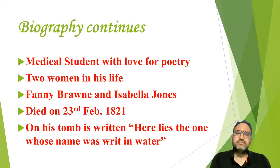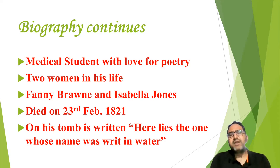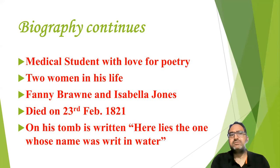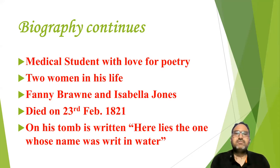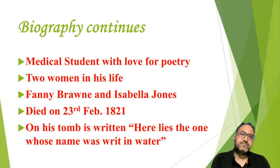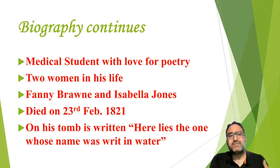It is said by some critics that two women came into his life, though he did not marry either. One was Fanny Brown and the other was Isabella Jones. John Keats was very close to Isabella Jones — he mentioned her at many places in letters he wrote to his brother. Then there was Fanny Brown, about whom it is said that she never reciprocated John Keats's love and never responded positively to him. It is said that some poems were written for Fanny Brown.